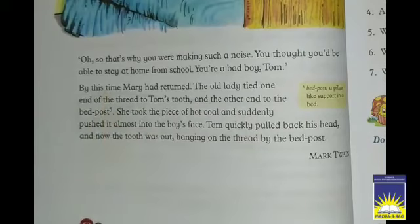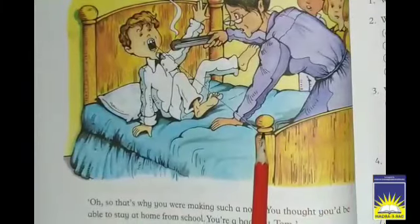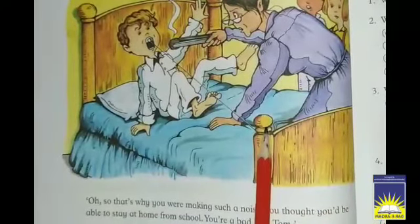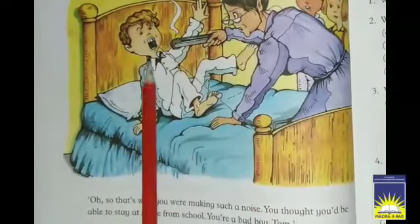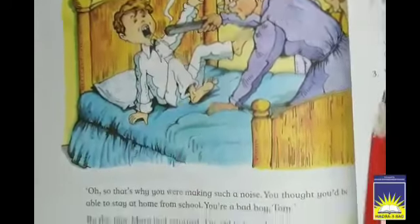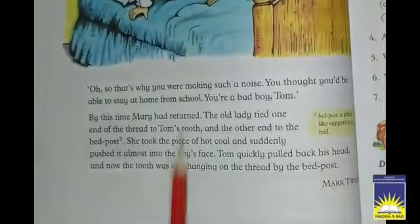Mary came back with the two things auntie had asked for. Auntie took the thread — you can see in the picture — she tied one end to Tom's tooth and the other end to the bedpost, preparing to pull the tooth out.